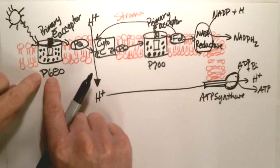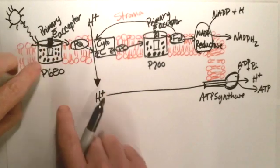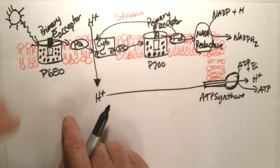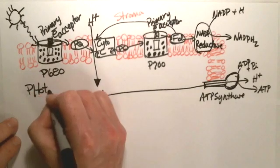Now, let's go back over here. Remember the fact that light struck this particular complex of pigments, knocked off an electron. That electron has to be replaced, and that process is called photolysis.